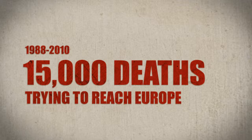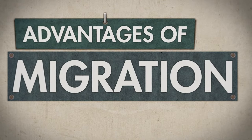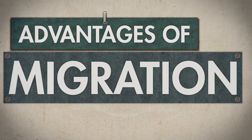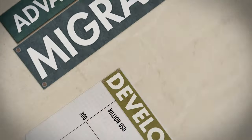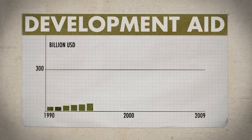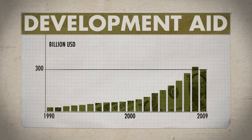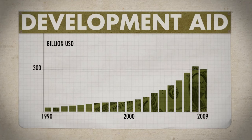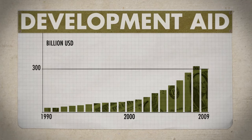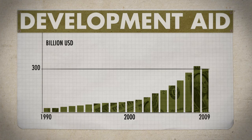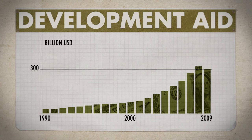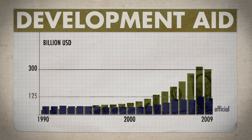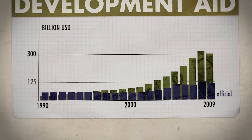What is not considered most of the time: migration also has positive aspects. Migration contributes to the economic development in migrants' countries of origin. Migrants around the world transfer over $300 billion to their home country each year — considerably more than the official development assistance to these countries.